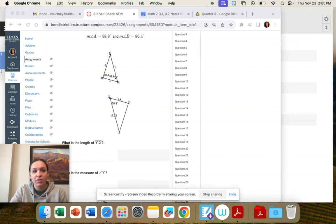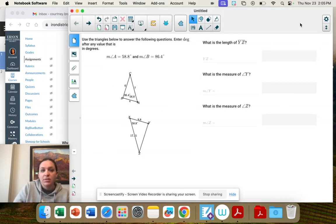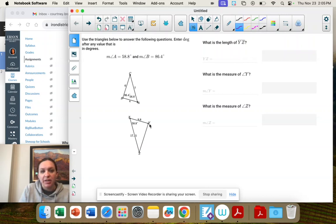We have some angles. We can see that one is the same. So we're trying to find the length from y to z. So right here.